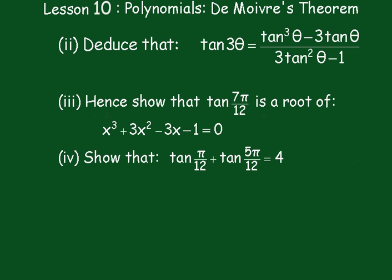In part four, we have to show that tan(π/12) + tan(5π/12) = 4. We know from part three that the roots are α, β, and γ.